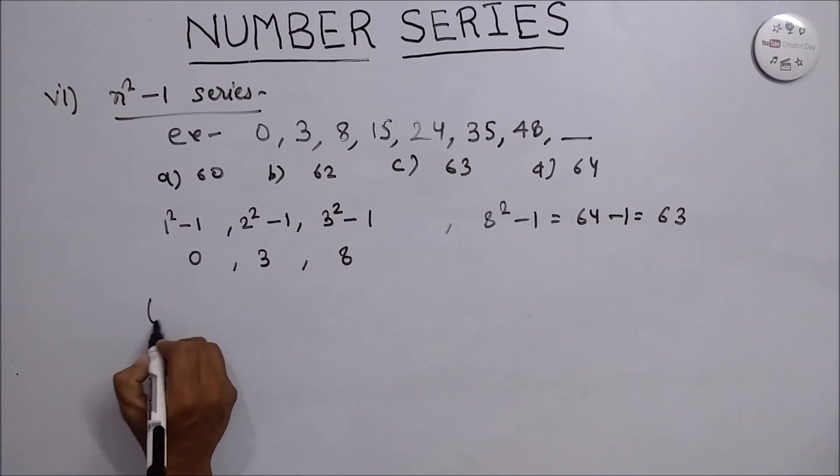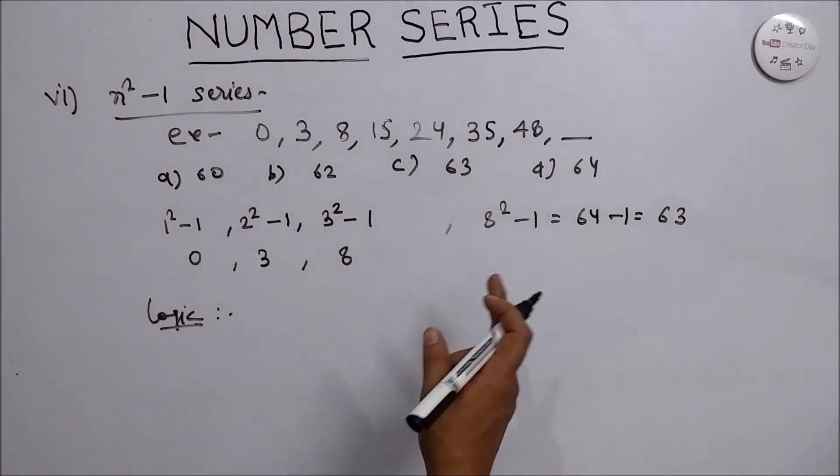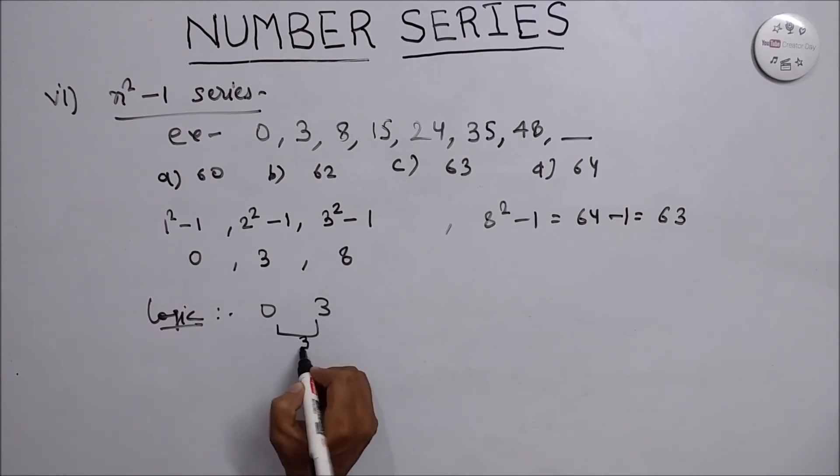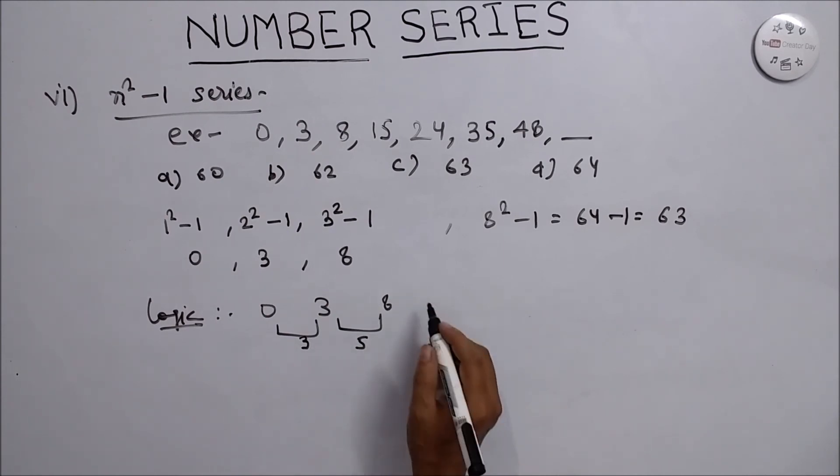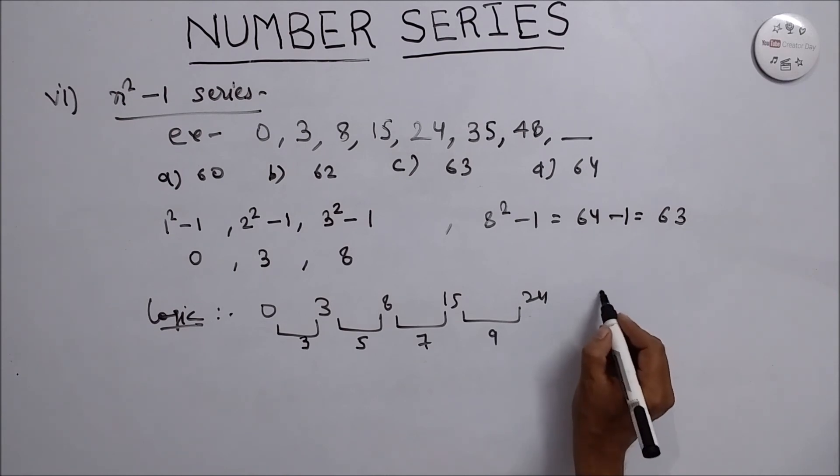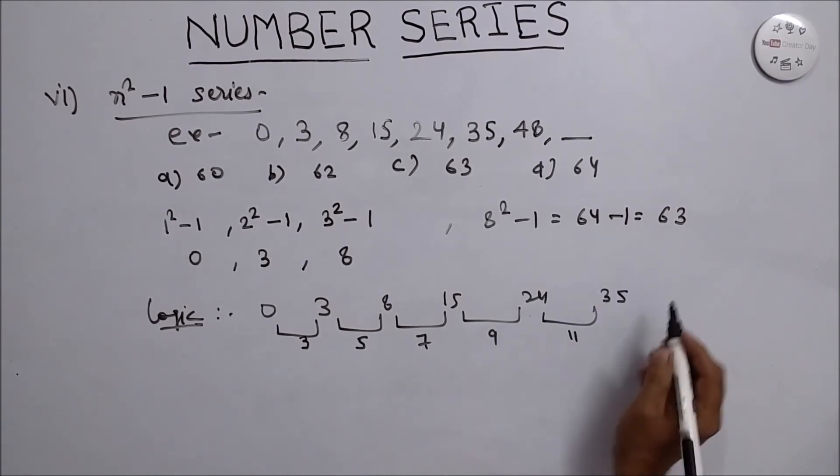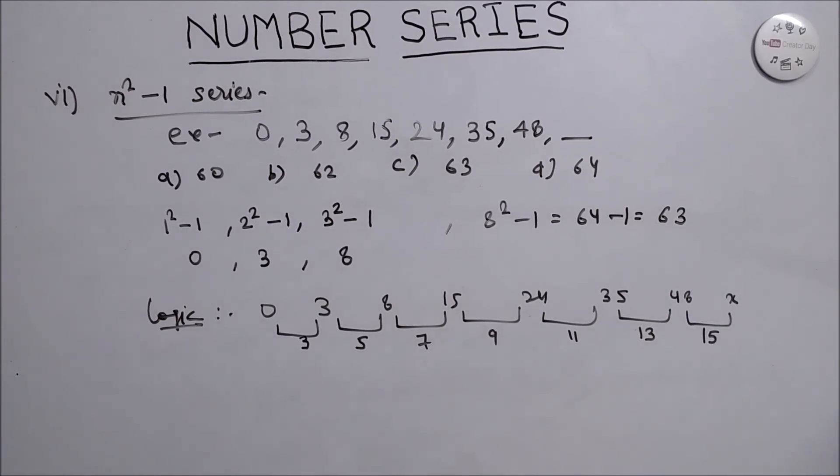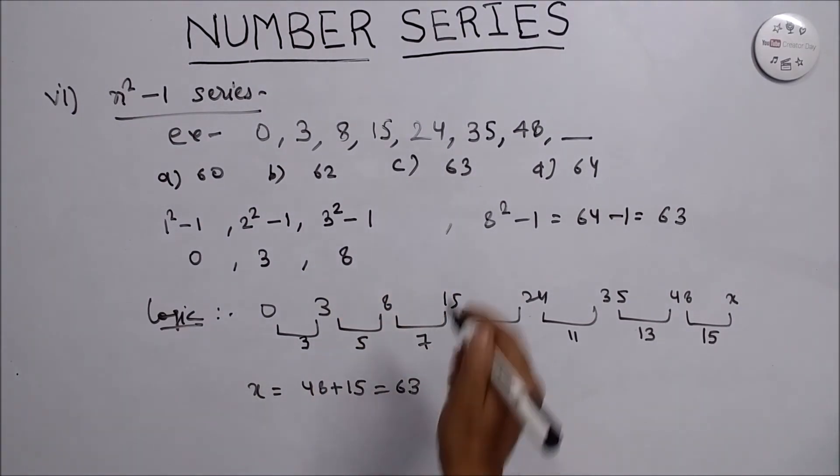Another logic is find the difference between each number. For example, the difference between 0 and 3 is 3, 3 and 8 is 5, 8 and 15 is 7. The difference between this is 9, 11, 13. So if we are talking about x, this will be definitely 15. So if we have to find the value of x, then 48 plus 15 is also equals to 63. By solving any way, you will get the same answer.